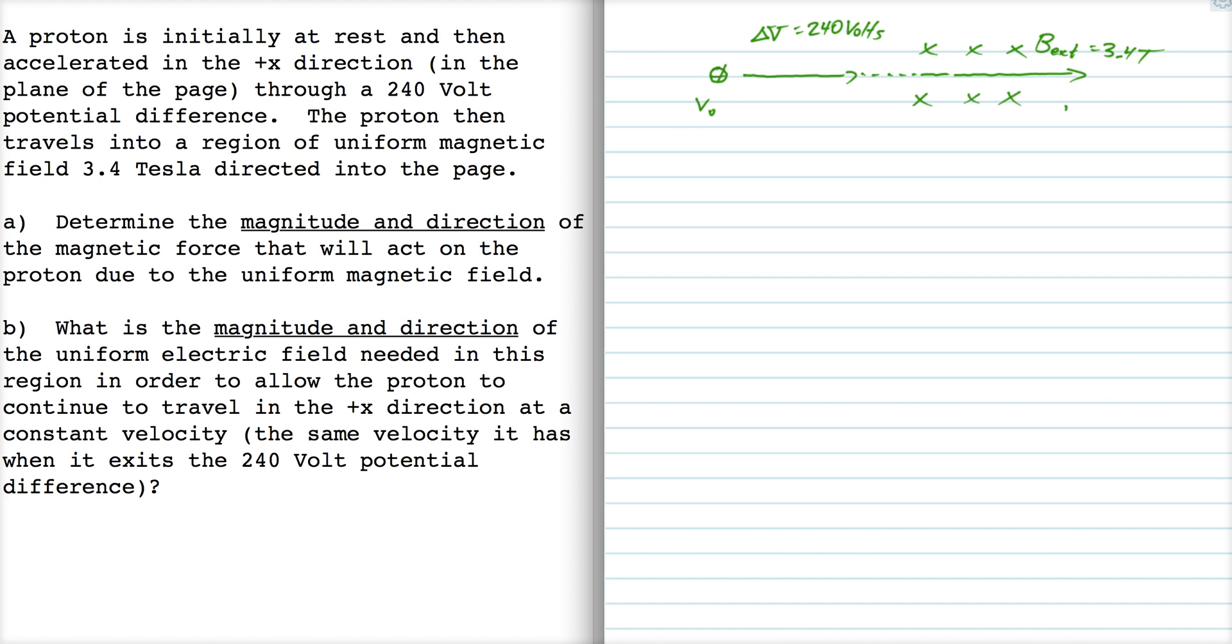Let's start with the direction. The right hand rule tells us that it's qv cross b where the force is palm, the velocity is thumb, and the magnetic field is fingers. If you point your thumb in the direction of the velocity and your fingers in the direction of the magnetic field, then you find that the magnetic force points up.